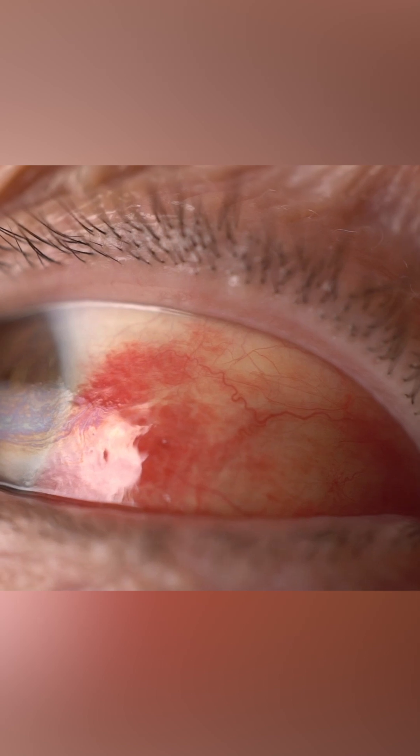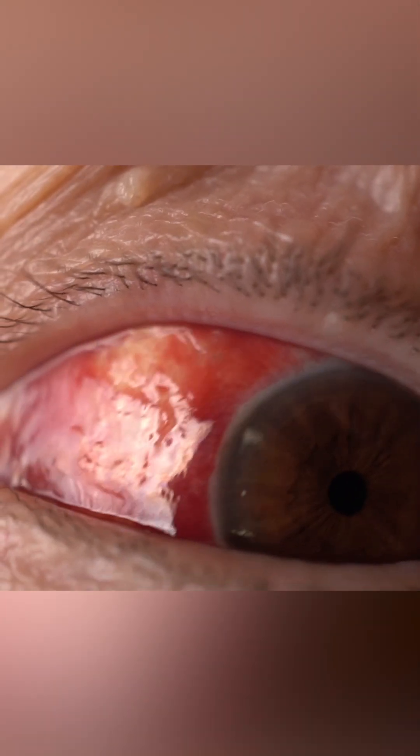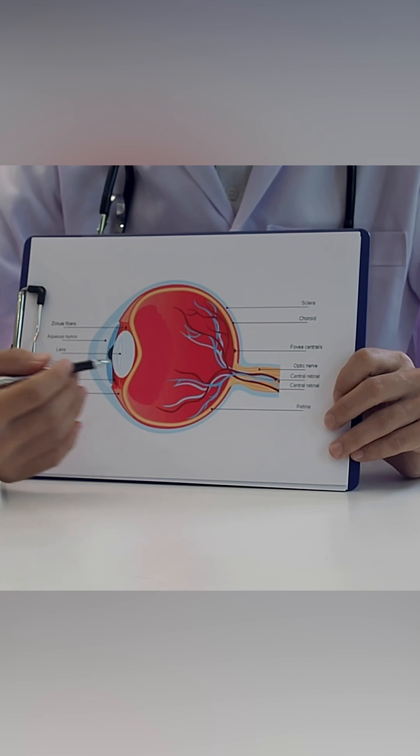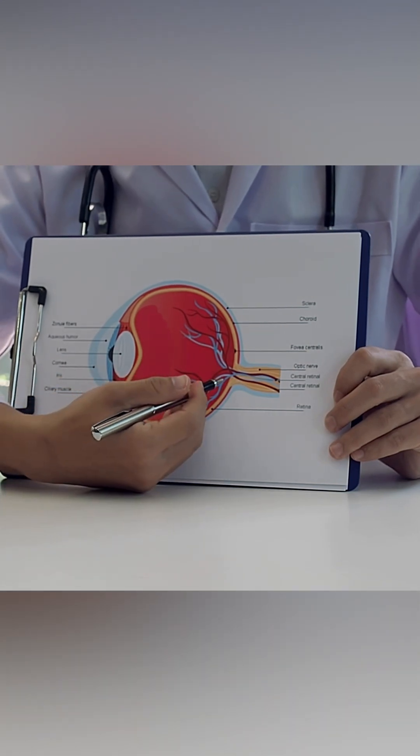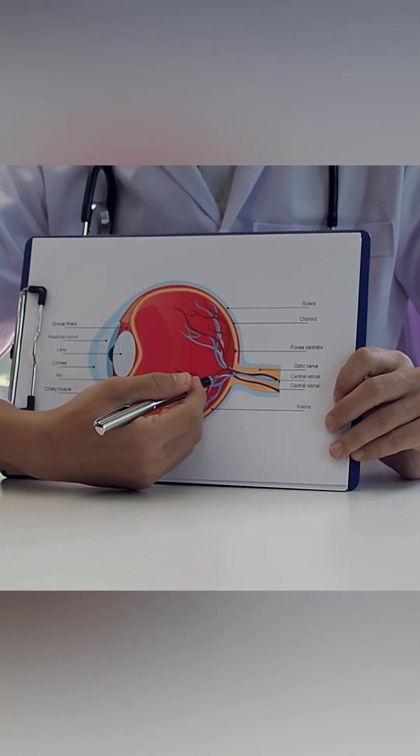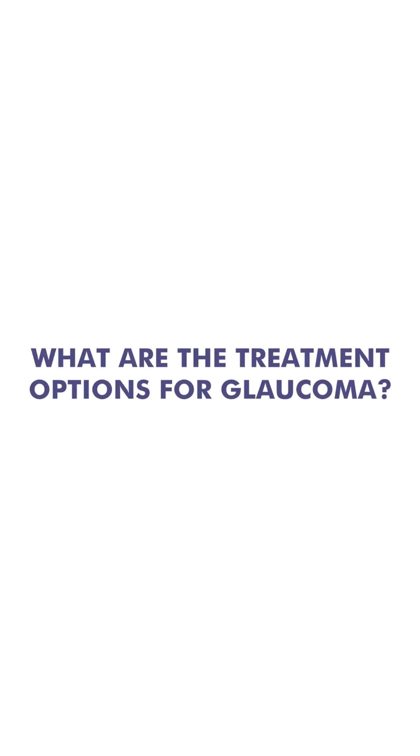Glaucoma is a condition in which there is an increase in the pressure of the eye. Just like we have blood pressure, we have pressure in the eye, and if that pressure is increased it can cause damage to the nerve in the eye — that is called glaucoma. For regular treatment, we give eye drops and tell you the schedule of drops and how to use them.